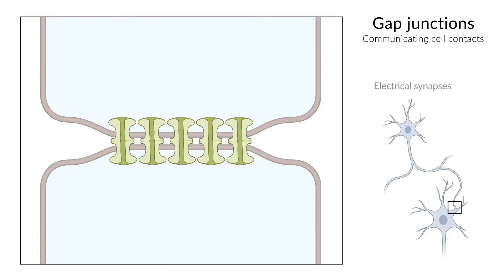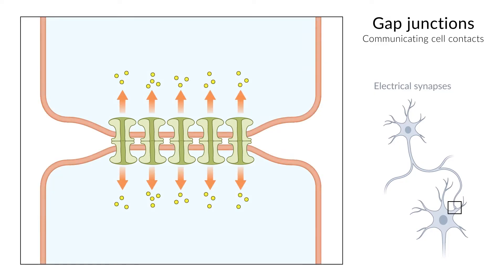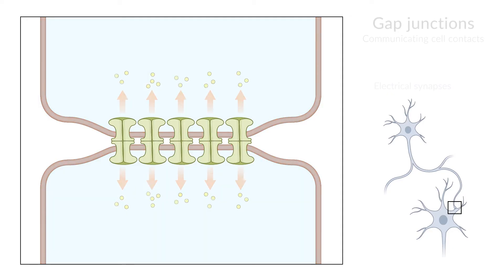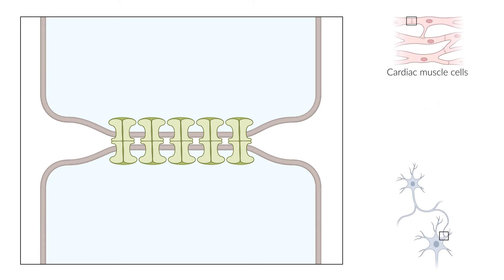The transmission of signals occurs in both directions, that is, bi-directionally, and without delay. Locations of gap junctions include cardiac and smooth muscle cells and the central nervous system.